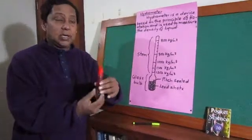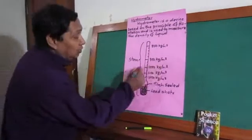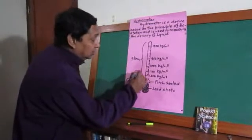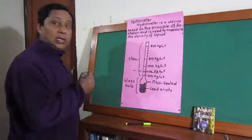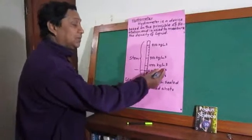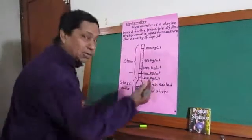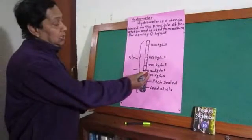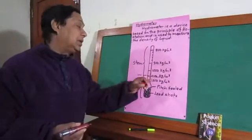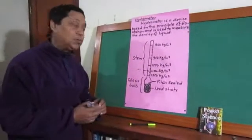It remains vertical in the liquid and a certain value of density will be matching with the surface of the liquid. Just for example, if this value, 1100 kg per cubic meter, is matching with the surface of the liquid, then the density of that liquid will be 1100 kg per cubic meter.